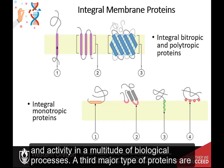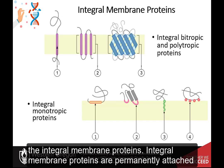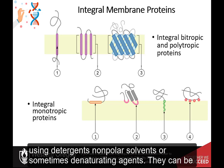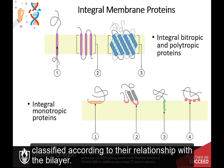A third major type of proteins are the integral membrane proteins. Integral membrane proteins are permanently attached to the membrane. Such proteins can be separated from biological membranes only using detergents, nonpolar solvents, or sometimes denaturing agents. They can be classified according to their relationship with the bilayer.